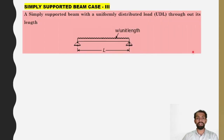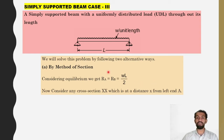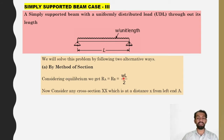Case number 3: simply supported beam with UDL throughout its length. UDL of intensity w is acting throughout. Considering equilibrium, RA equals RB equals W·L by 2, since half the total load W·L acts on each side.